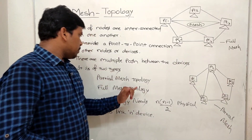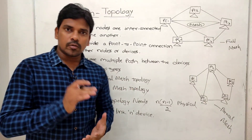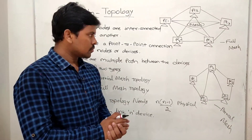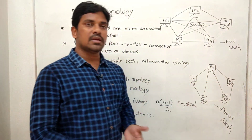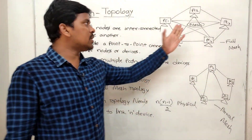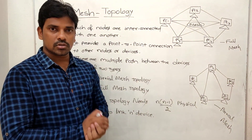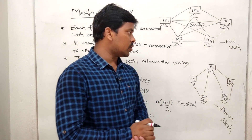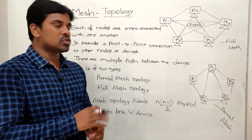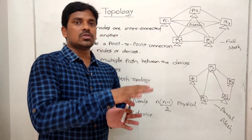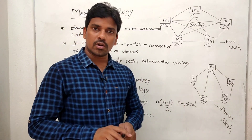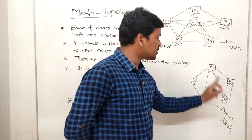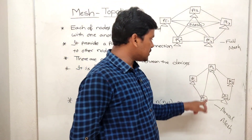Mesh topology is of two types: partial mesh topology and full mesh topology. In full mesh topology, every node is interconnected with every other node. In partial mesh topology, not all nodes are fully connected — for example, PC1 may only connect to PC2 and PC4, not all others.